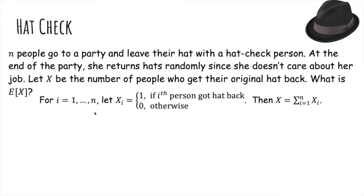So now for i equals one to n, let xi be one if the i-th person got their hat back and zero otherwise. Then x, the number of people who get their hat back, is the sum of these indicator one and zero variables, just like the mermaid problem.